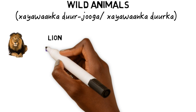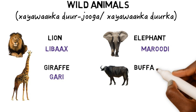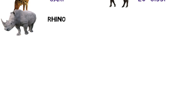A lion is Livah, while an elephant is Marothi. A giraffe is Geri, while a buffalo is Lokgisi.